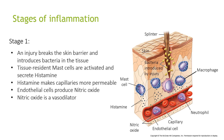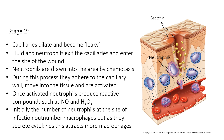Looking at the stages of inflammation: in stage 1, an injury breaks the skin barrier and introduces bacteria into tissue. Tissue-resident mast cells are activated and secrete histamine. Histamine makes the capillaries more permeable. Endothelial cells produce nitric oxide, which is a vasodilator. In stage 2, the capillaries dilate and become leaky. Fluid and neutrophils enter and move to the site of the wound. Neutrophils are drawn into the area by chemotaxis.